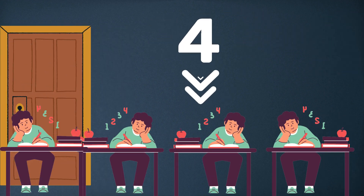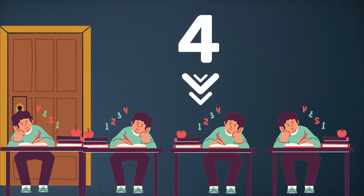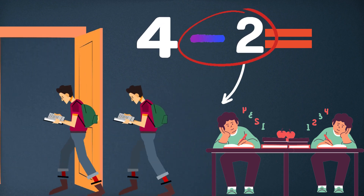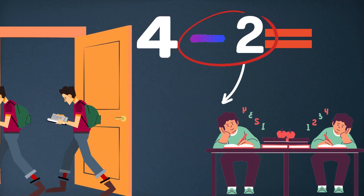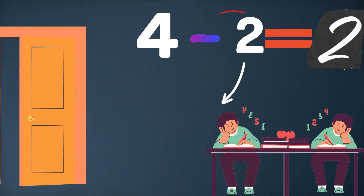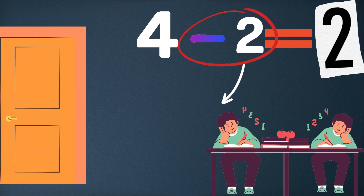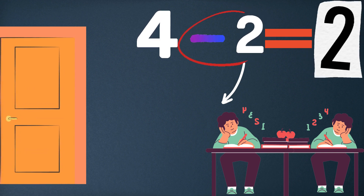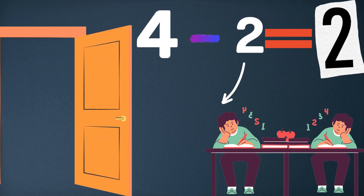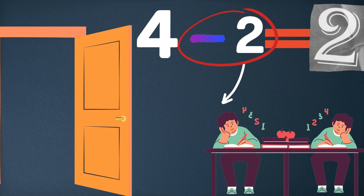Dear kids, let's solve another example of one-digit subtraction. Four boys are studying in the class. Two boys left the classroom, shown by a red circle highlighting the number 2 with a subtraction sign. Now two boys are studying in the classroom, so the answer is 2.